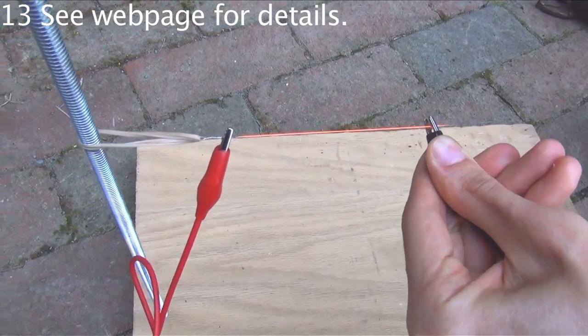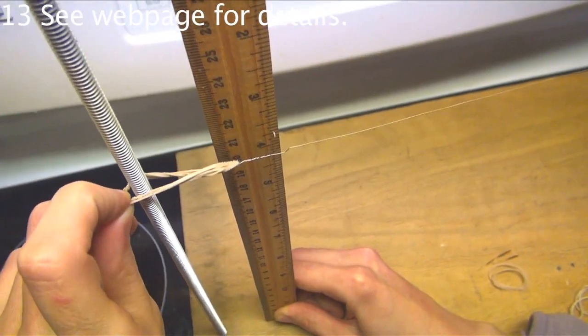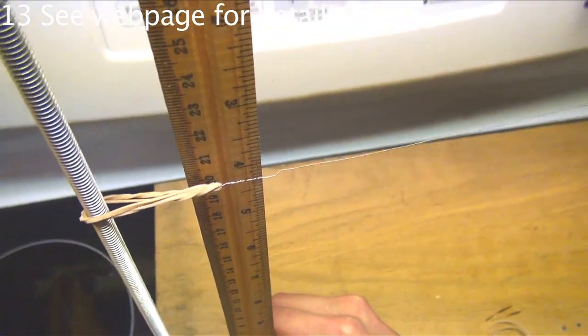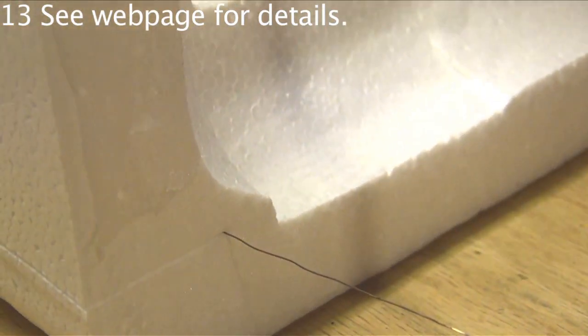Measure where you want to make the cut and make sure the foam is flat on the board as you cut. It's that simple.